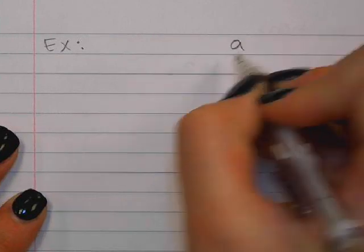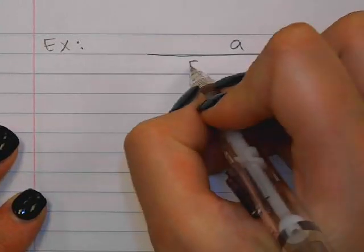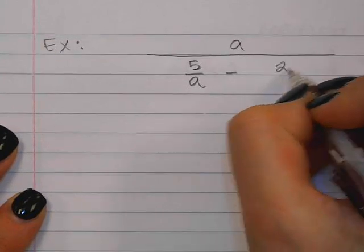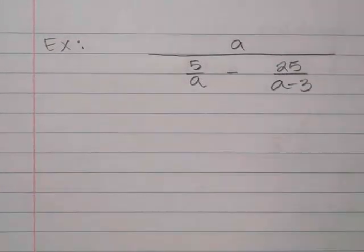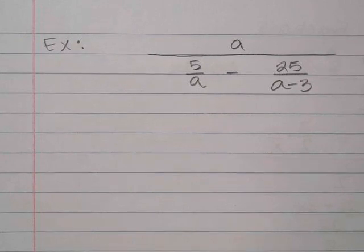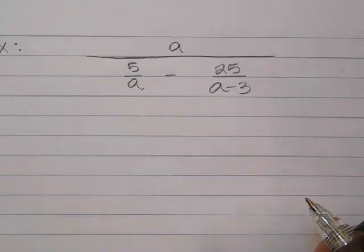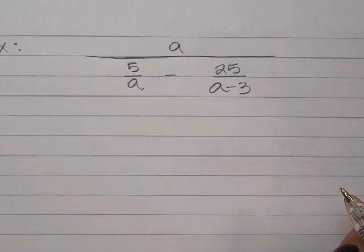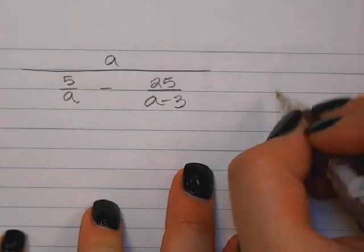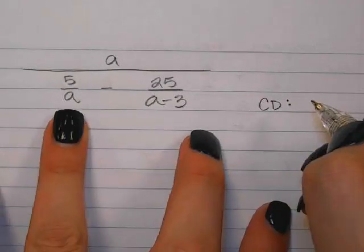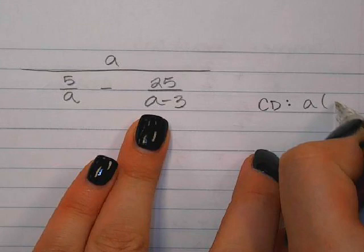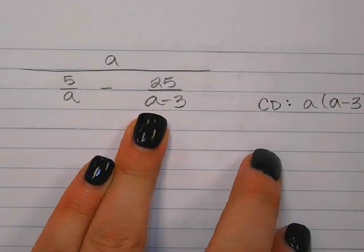One last example problem. I have a divided by 5 over a, minus 25 over (a minus 3). This time the two fractions being subtracted are on the bottom. So I'm going to go ahead and look at those and get my common denominator. I have an a by itself and an a minus 3, so I'm going to need both of those.